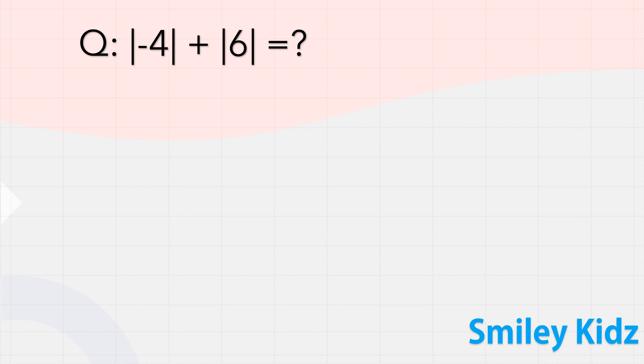The absolute value of minus four plus the absolute value of six. First, let's find the absolute values: the absolute value of minus four is four, and the absolute value of six is six. Four plus six is ten, so the answer is ten.